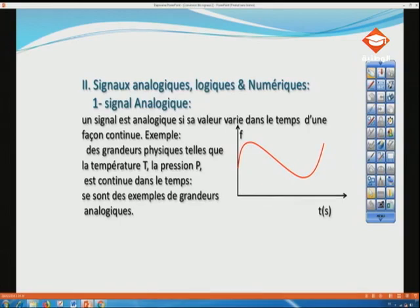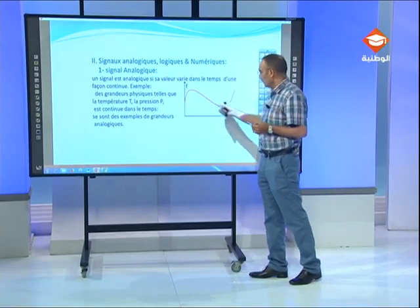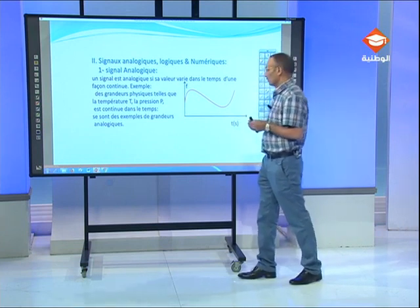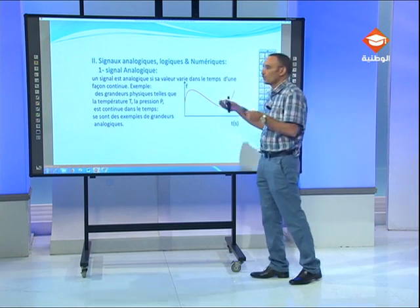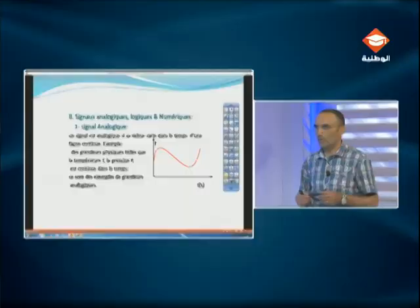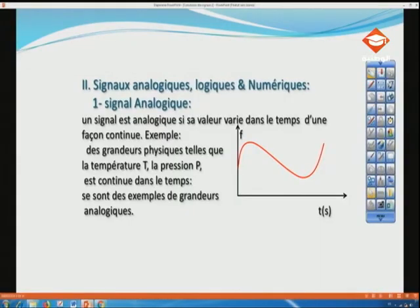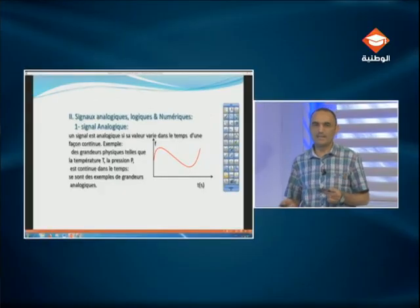Comme vous le voyez sur ce diagramme, un signal analogique est une fonction qui varie d'une façon continue dans le temps. Toute grandeur ou fonction qui varie continuellement dans le temps peut être considérée comme signal analogique. Exemples de grandeurs physiques : la température, la pression — chacune d'elles est continue dans le temps. Ce sont des exemples de grandeur analogique.